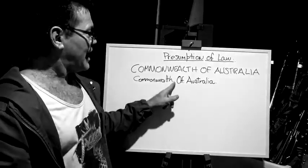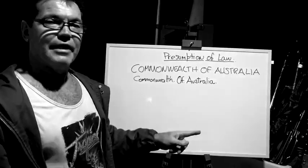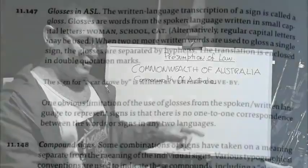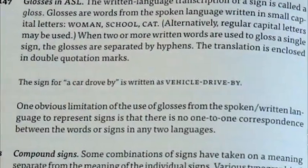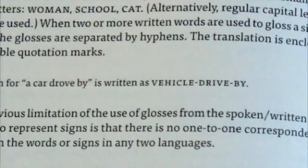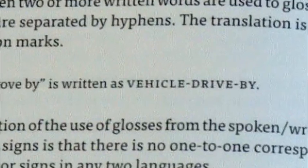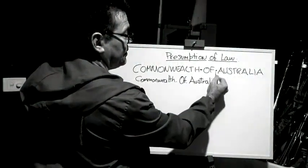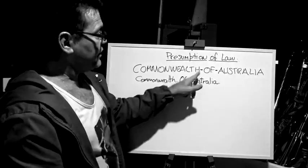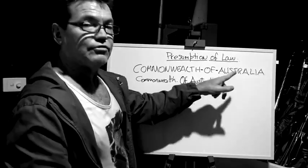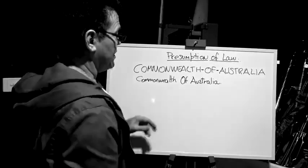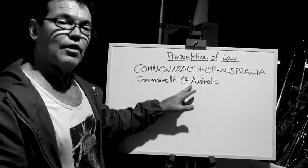It reads Commonwealth, and, of, and Australia. Now, in order to bring this type of text factually and make it read Commonwealth of Australia, according to Article 11, 147 of the Chicago Manual of Styles — which deals in ASL, or American Sign Language — we have to hyphenate. When we hyphenate between the Commonwealth, the of, and the Australia, that then comes back to Commonwealth of Australia.